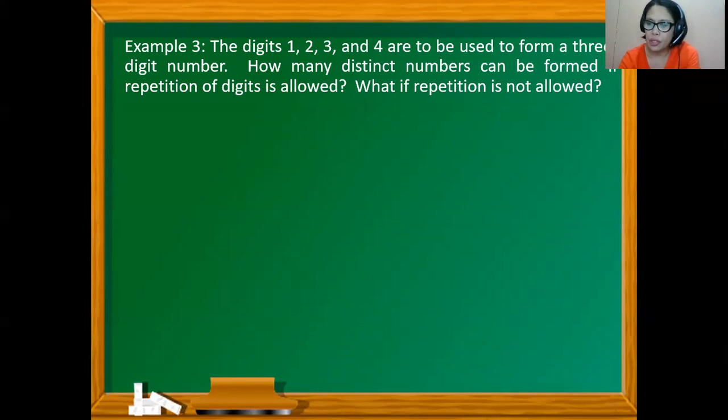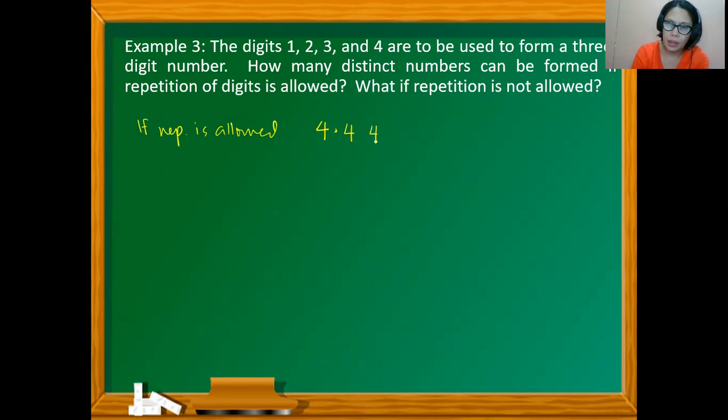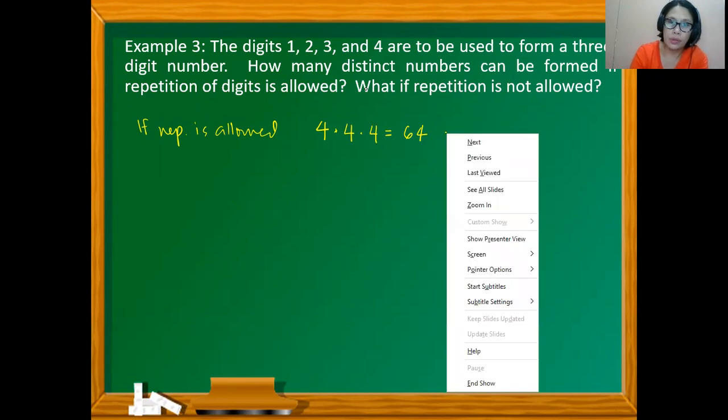So there are choices for each digit of the required number. Therefore, the number of possible outcomes when repetition is allowed is, so here, if repetition is allowed, there are four ways of selecting the hundreds digit, four ways of selecting the tens digit, and again, there are four ways of selecting the units digit. So we have 4 times 4 times 4, so we have 64 numbers can be formed.